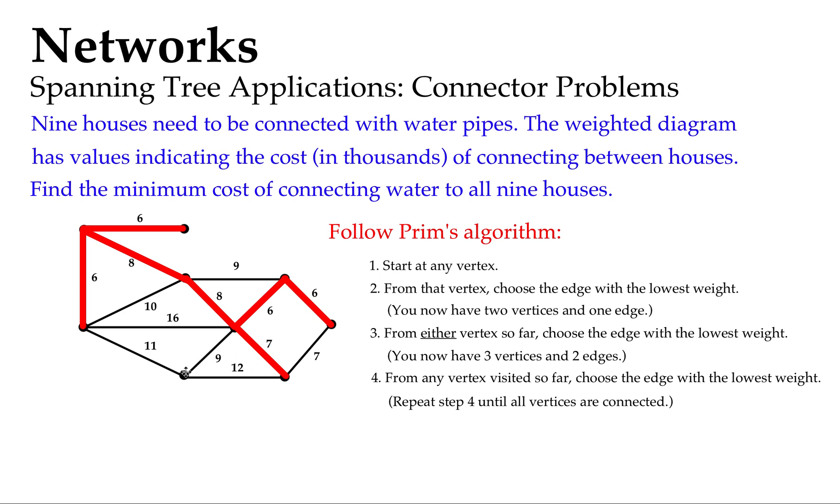And then the last vertex, the last house that hasn't got any water yet, could be connected by that 12 from this vertex, that 9, or that 11. I'm going to choose the 9 because I don't want to spend money that I don't have to spend.